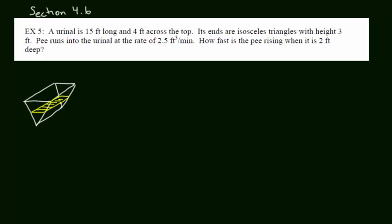This is one of the types where you have a container and then a fluid in the container. So in this container is the fluid, pee. Like the other problem, the container's dimensions are fixed. So let's write some of these dimensions down. The height of the urinal is 3 feet. The base of it along here is 4 feet. And then its depth, as it goes back, is 15 feet.